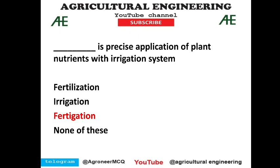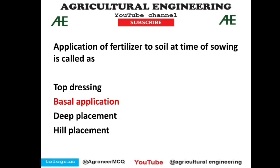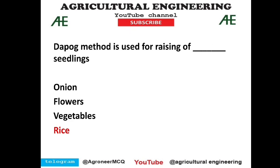Application of plant nutrients with an irrigation system is called fertigation. We don't use the word 'irrigation' for fertilizers — fertigation is the application of fertilizers using the irrigation system, so option C is correct. Application of fertilizer to soil at the time of sowing is called basal application — option 2 is correct. The epoch method is used for raising of rice seedlings.